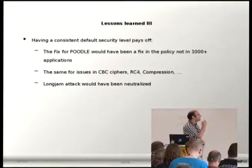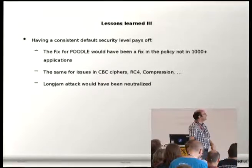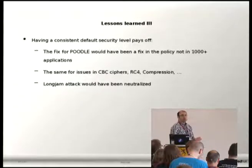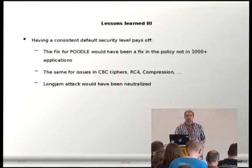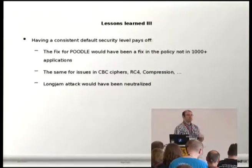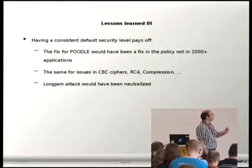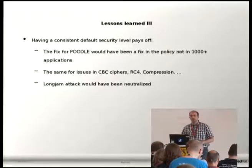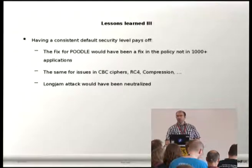The third thing is that I believe it pays off having such a system-wide security level. In attacks we have seen in recent years on TLS and SSL — like Poodle, the CBC cipher attacks, the RC4 attacks — it would have been much easier to simply change the policy and remove these options from the protocol rather than modify each and every application to eliminate these options. Also, as mentioned, the Logjam attack wouldn't have been an issue.